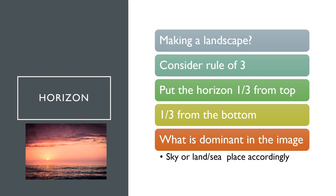Are you making a landscape? Think about the rules of three. What's the dominant image? Is my ocean dominant? No, my sunset is dominant here. So I really want two thirds for my sky and one third for my ocean.